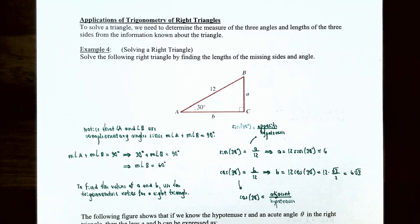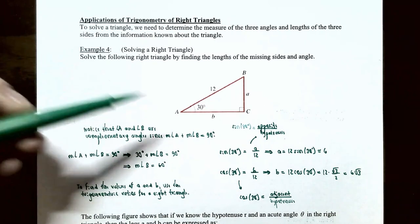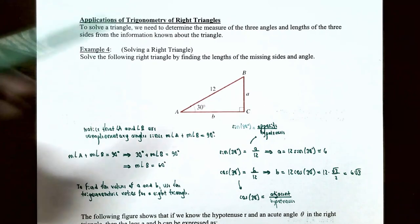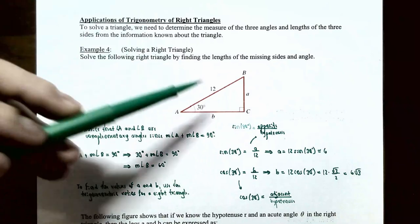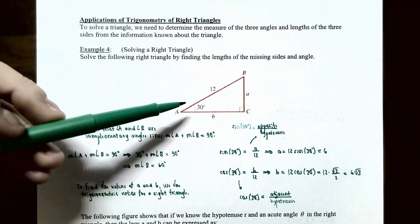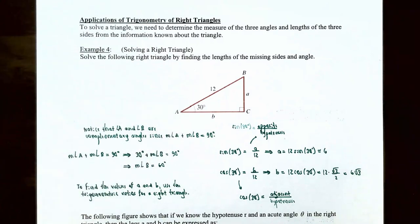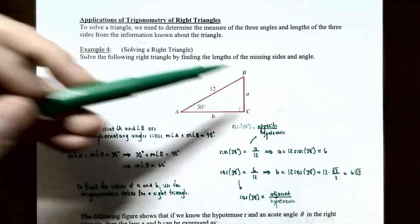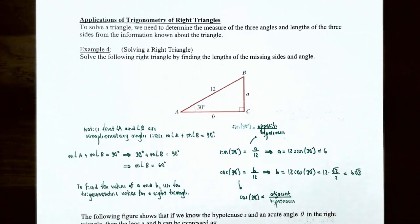In example four we're going to solve a right triangle — finding the lengths of the missing sides and the missing angle. We have a right triangle where the hypotenuse has length 12 and angle A has a 30-degree measure. However, we don't know angle B and we don't have any information about the length of side A or side B, so we need to find those.